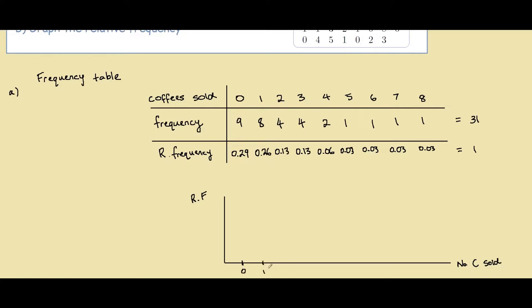So we have 0, 1, 2, 3 and so on. For our relative frequency we can use any scale. But as you can see the highest is 0.3. So I might just put the highest here is 0.3. And maybe this one is 0.15. So for 0 we have all the way here.